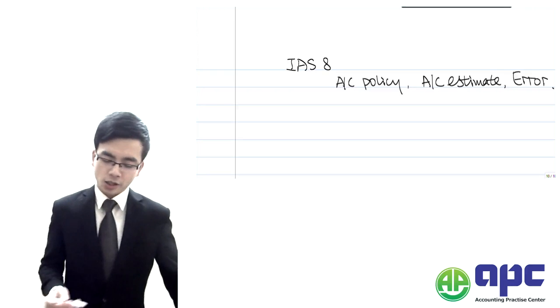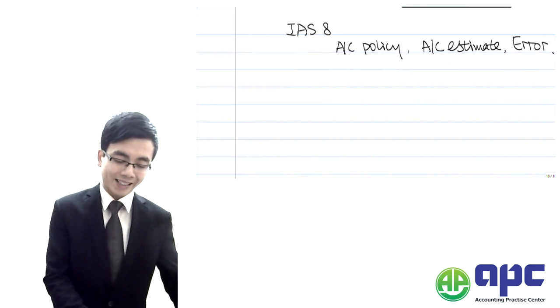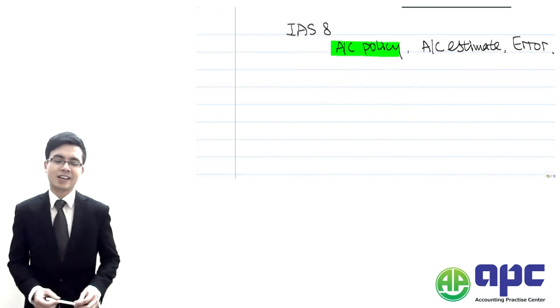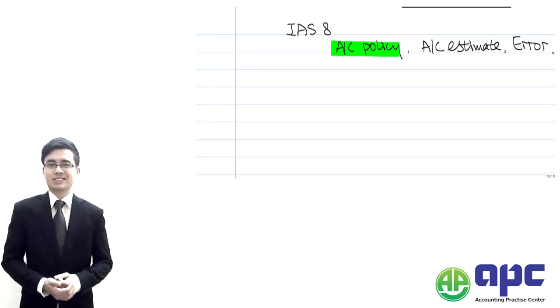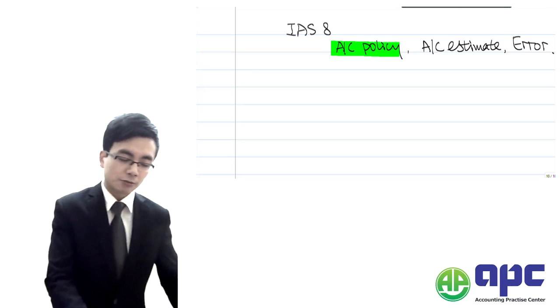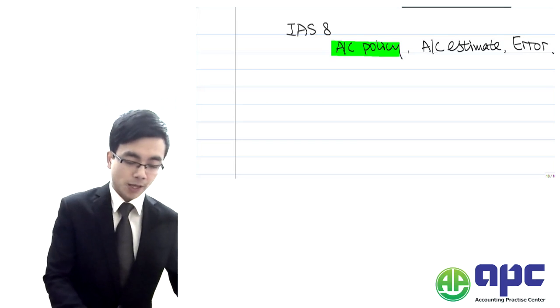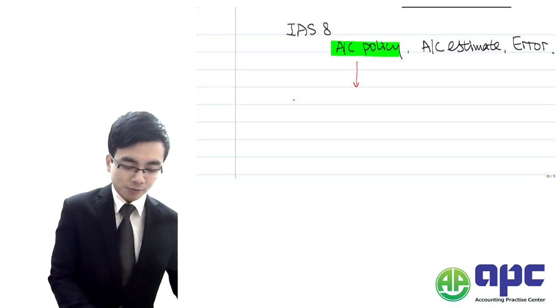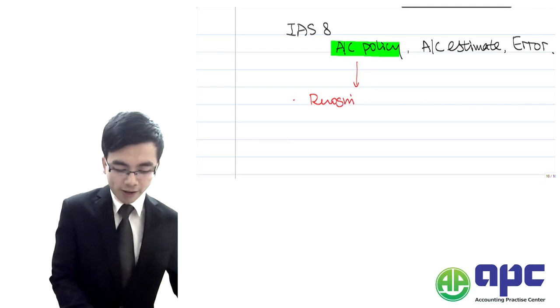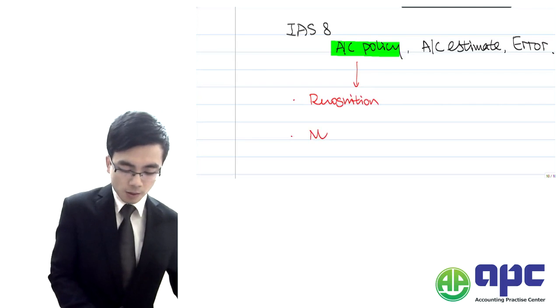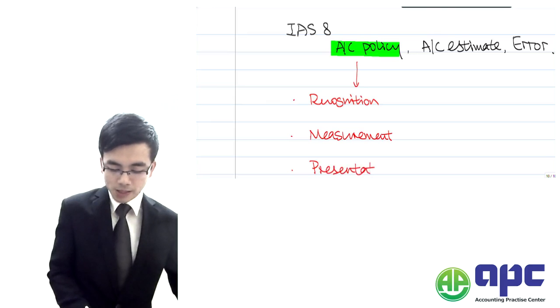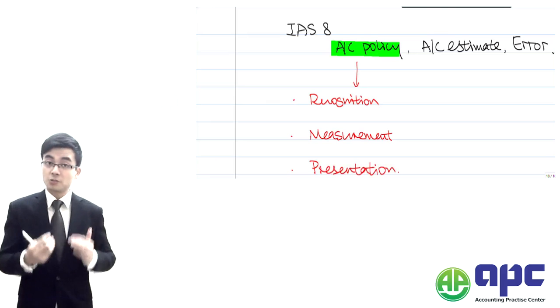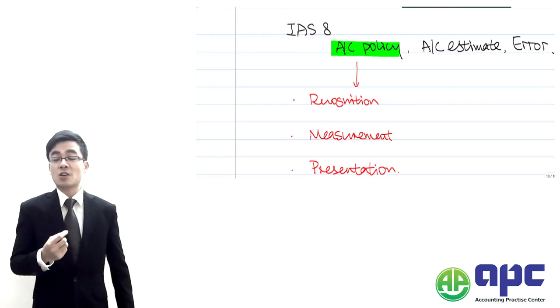The first thing we're going to introduce is what do I mean by accounting policy. A lot of students get stuck here. From the IAS number 8 perspective, accounting policy has something to do with recognition, measurement, and presentation. As long as something has to do with one of these three aspects, that will be the accounting policies used by the business.